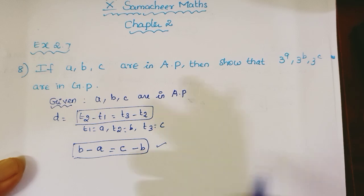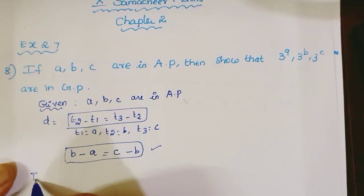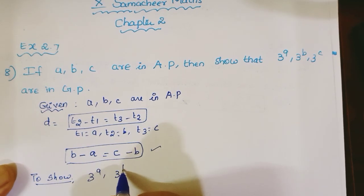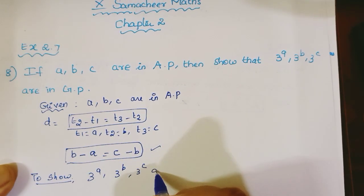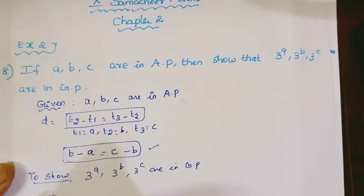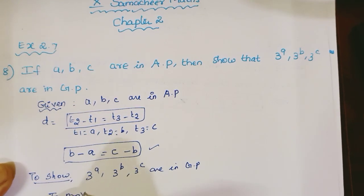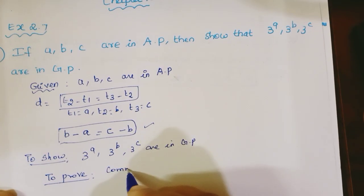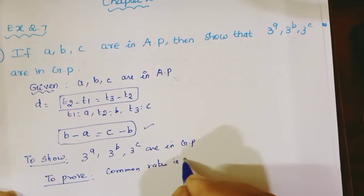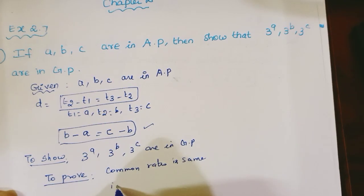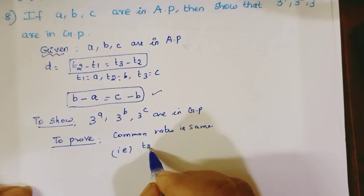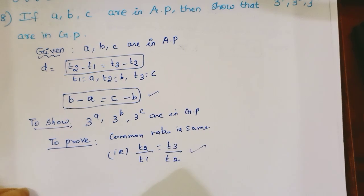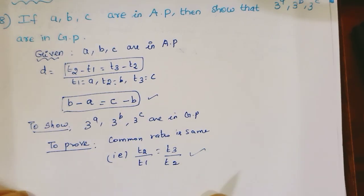We need to show that 3 power A, 3 power B, 3 power C are in GP. To prove they are in GP, we need to show the common ratio is the same, that is T2 by T1 is equal to T3 by T2.